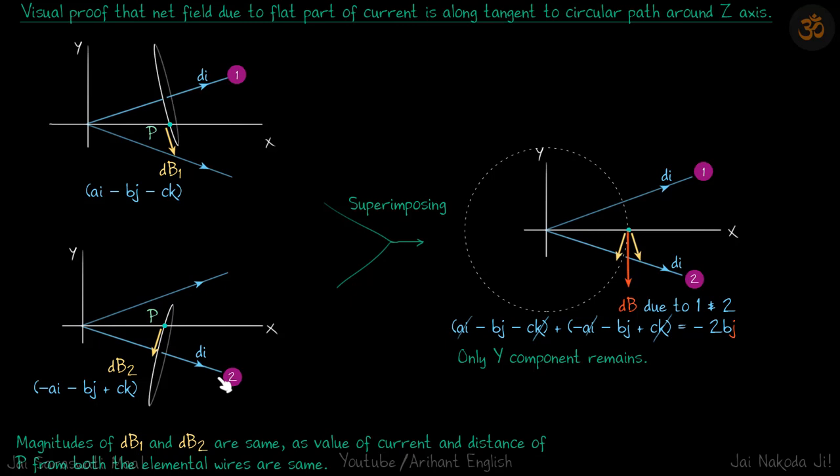Now for this part of the wire, this elemental wire, the field will be in this direction. Negative a. Magnitudes of dB₁ and dB₂ are same, as value of current is same—both are dI—and distance of P from both the elemental wires is also same, because this is just in center of both wires. In vector form, we can write as -a î minus b ĵ plus c k̂, because this time the wire is coming out and going up. This is the top part of the wire, coming out of the plane, which is plus z direction.